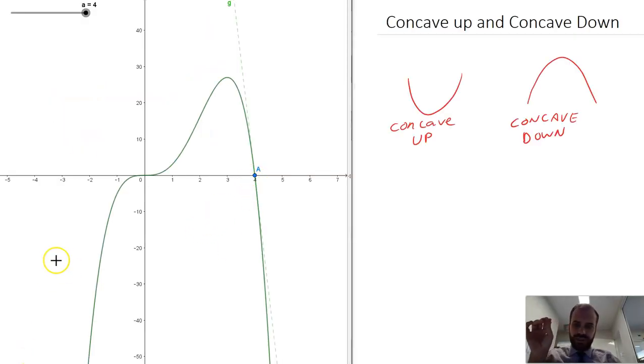So before we get into the definition, let's look at a graph. This is a graph. You don't need to care about what the actual equation is. It's just a nice graph. Now, you might want to pause the video here and think about what sections of this graph are concave up, and what sections of this graph are concave down.